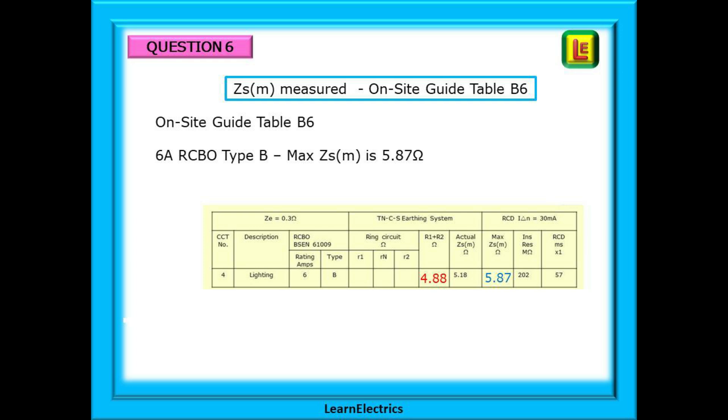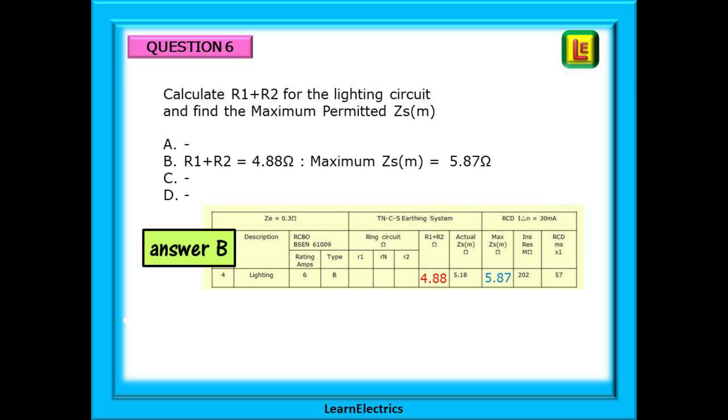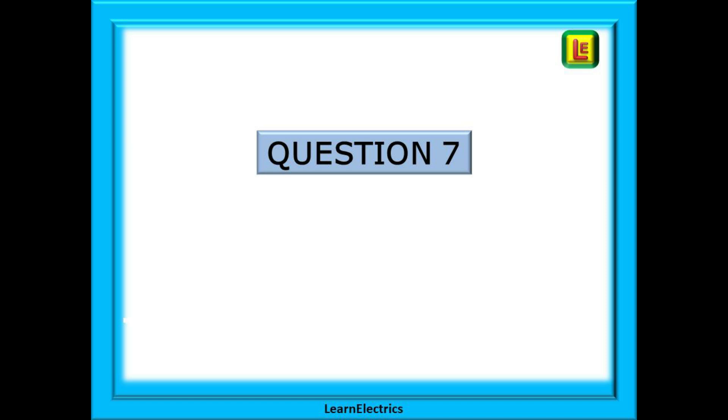Now look at Table B6 in the On-Site Guide to find the maximum measured ZS for a 6-amp Type-B RCBO. This is shown as 5.87 ohms and it's no more difficult than that. If you can find the right page in the right book then you can find the right answer. So choose answer B. On to question 7.